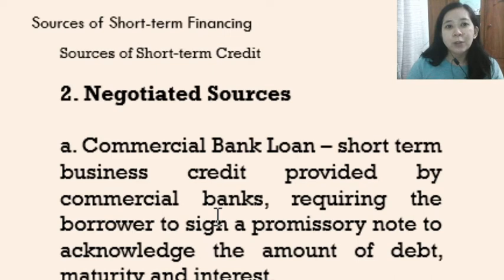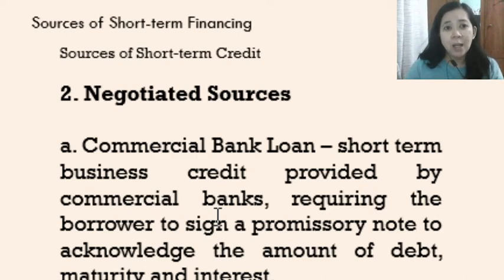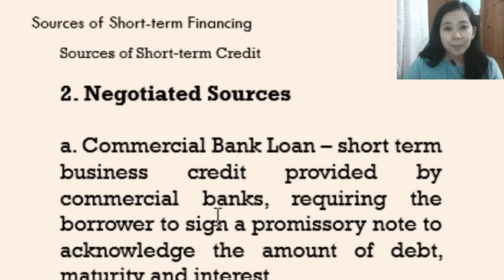The second major source of short-term credit is negotiated sources. The first type under negotiated sources is the commercial bank loan — a short-term business credit extended by commercial banks. They require the borrower to sign a promissory note to acknowledge the debt, which includes the maturity date and the interest rate.